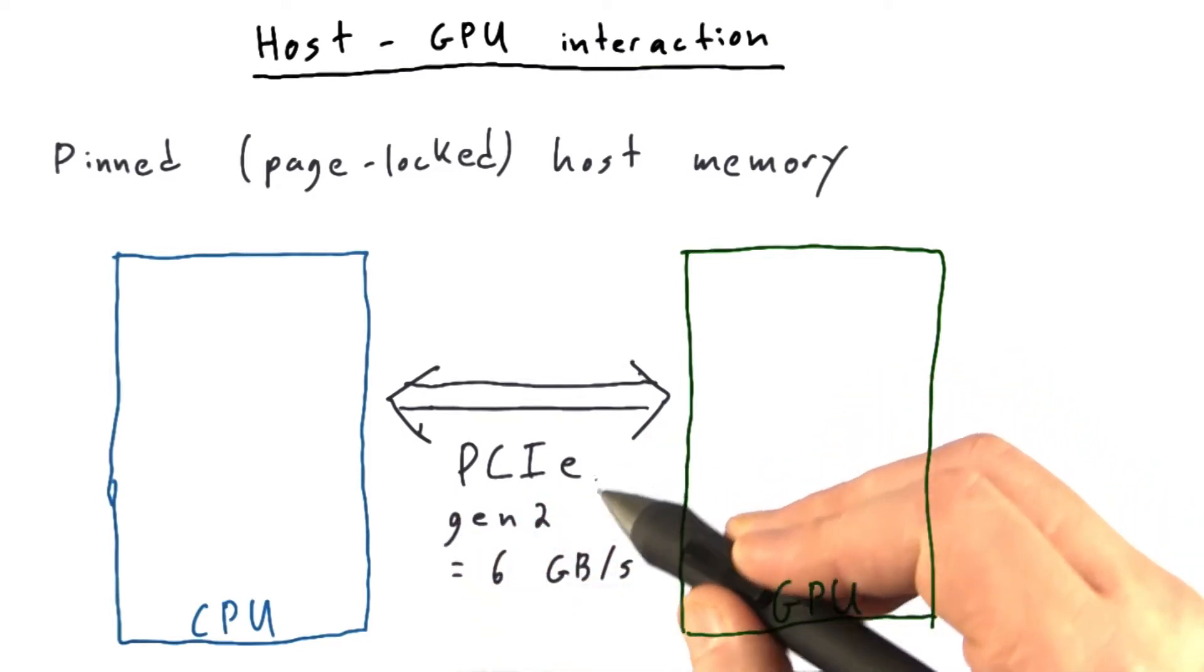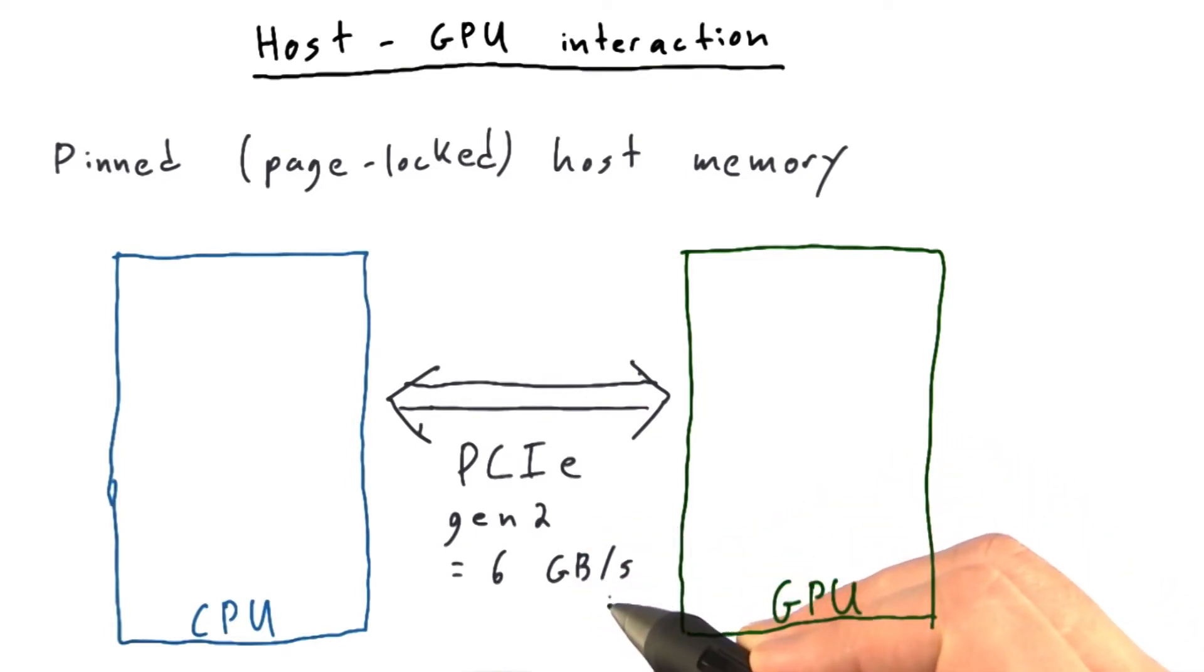Today, for example, most systems are PCI Express Gen 2, which can in practice get about 6 gigabytes per second maximum in either direction.